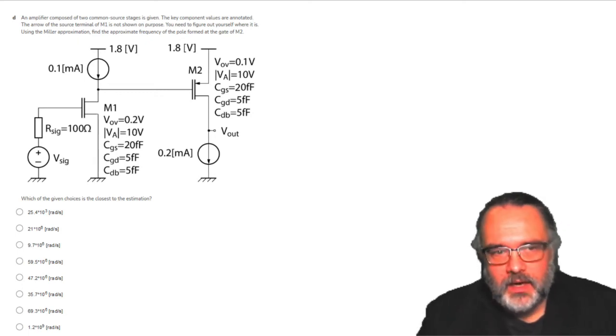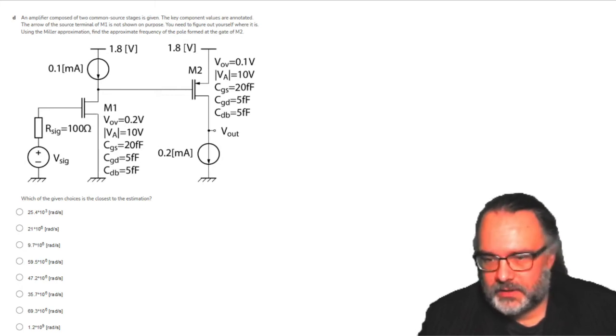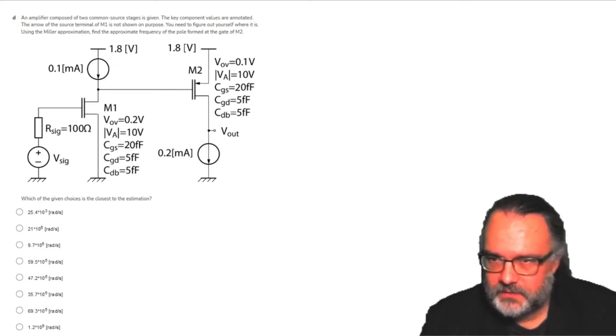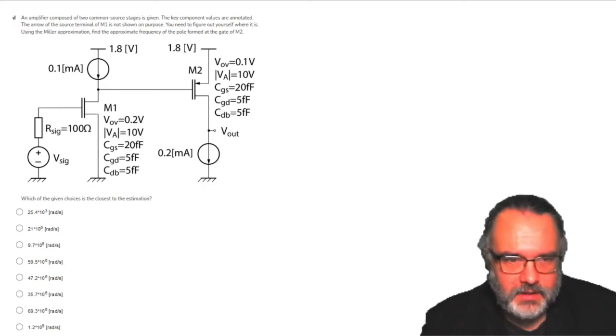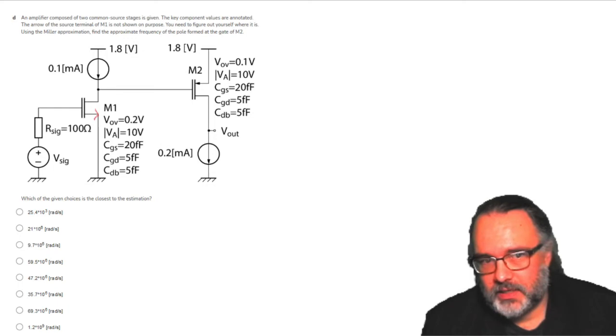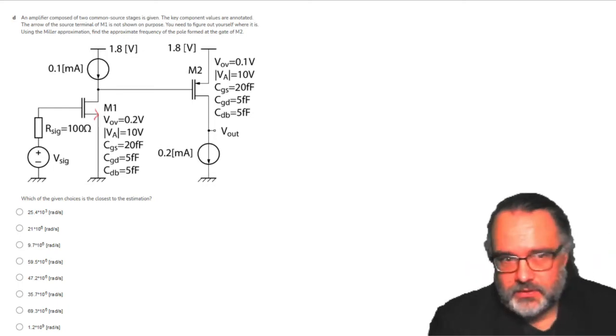An amplifier composed of two common source stages is given. The key component values are annotated. The arrow of the source terminal of transistor M1 is not shown on purpose; you need to figure out where it is. Because the first stage is a common source stage, the output should be taken from the drain and the common node for the input and output is the source.